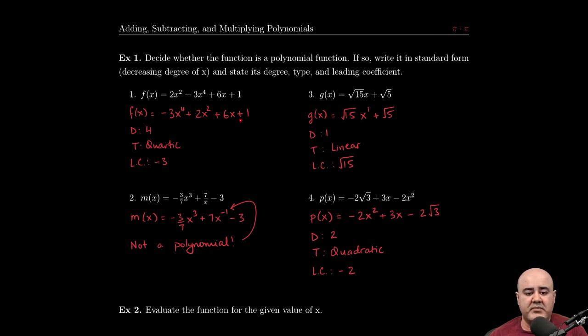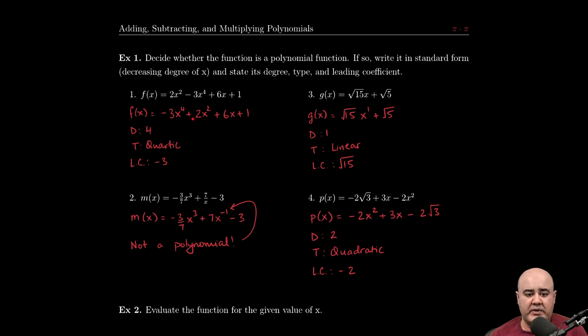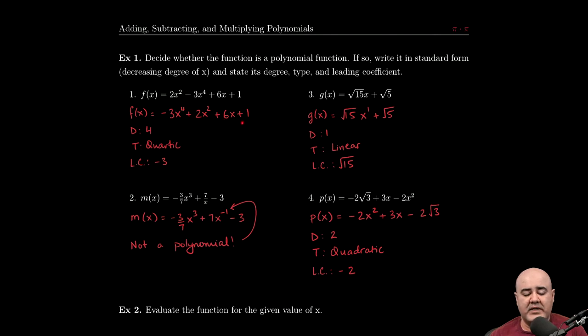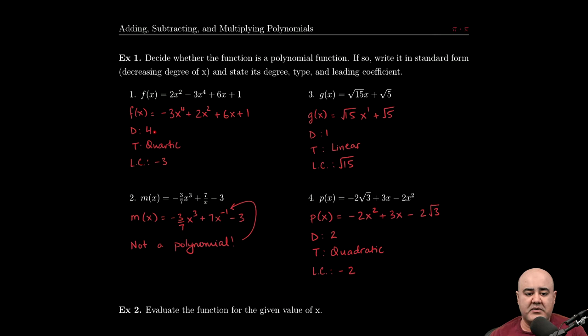Once the equation is written in standard form, we can start looking for are all the powers whole numbers? So 4, 2, 1, 0, yes. So since all the powers are whole numbers and the coefficients are all real numbers, -3, 2, 6, and 1, this is indeed a polynomial in standard form. The highest power of the variable we see here is 4, so that happens to be the degree.